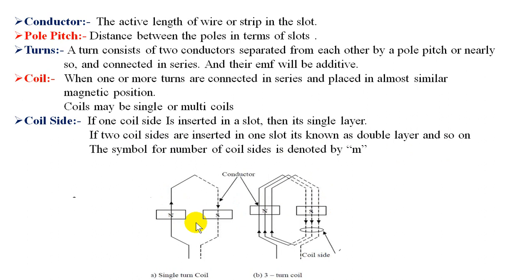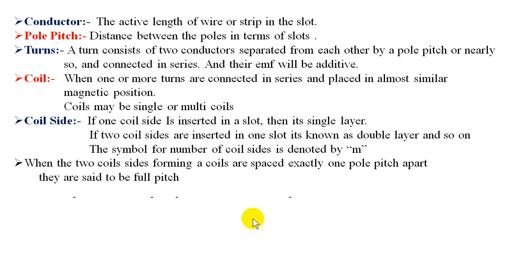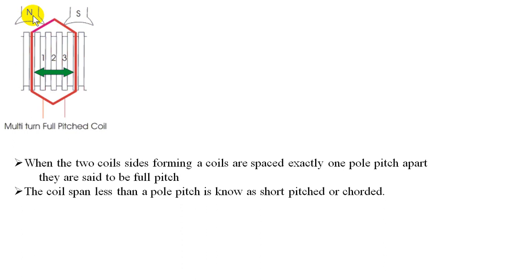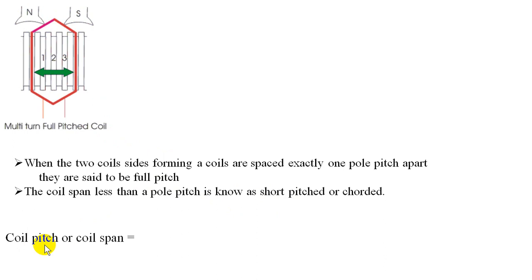When two coil sides forming a coil are separated exactly one pole pitch apart, they are said to be full pitch; otherwise short pitch. You can see this coil is between north and south poles. These two sides are called coil sides. The distance between these two coil sides is either full pitch or short pitch depending on the distance between the two poles — that distance is called pole pitch. If the coil sides are equal to the pole pitch, it is full pitch, giving 180 degrees electrical.